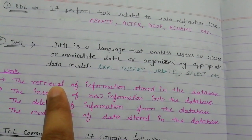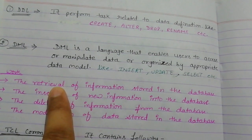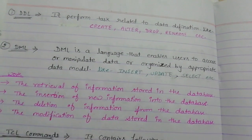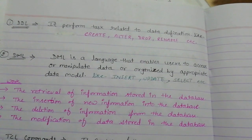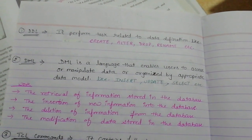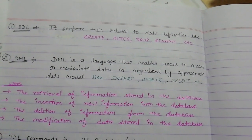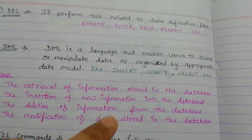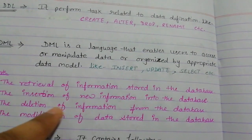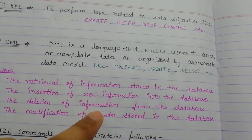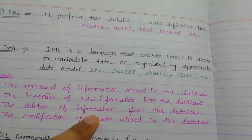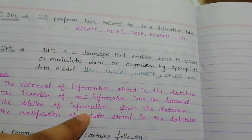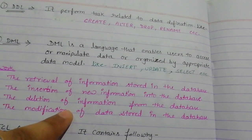Second, the insertion of new information — if we already have any type of existing information, we can manipulate it with a new operation. If we have information stored and want to update or add something new, then we use the DML command. Third, the deletion of information from the database — if any information is meaningless in our table, we will delete it. So the delete command is also performed in DML.